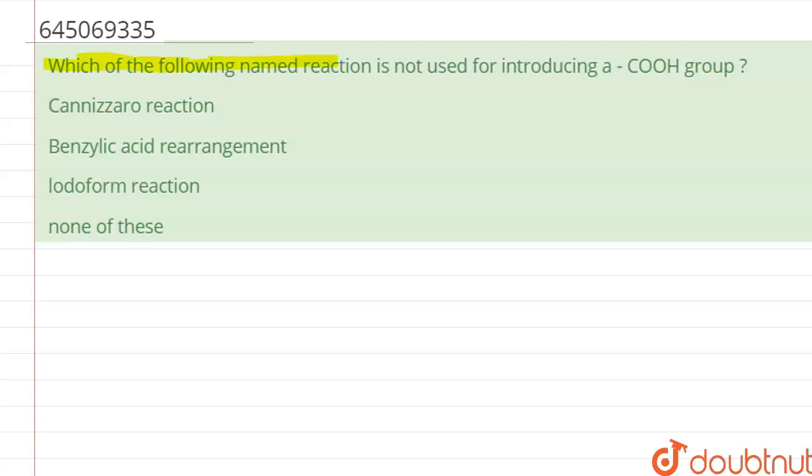have been given: which of the following named reaction is not used for introducing a COOH group? So basically, Cannizzaro